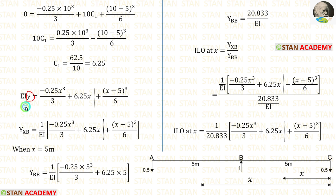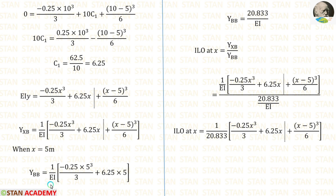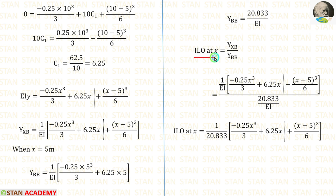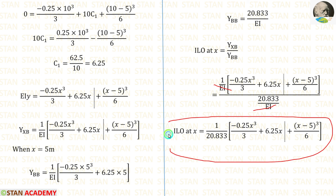We know that this Y is equal to YXB, because we calculated the deflection about the distance X. When X is equal to 5 meters, we can calculate YBB. In this equation, applying X=5, after the calculations we get YBB equal to 20.833/EI. We know the formula for the influence line ordinate at X equals YXB divided by YBB. We have calculated YXB and YBB. Applying the values and eliminating EI, finally we get this formula.